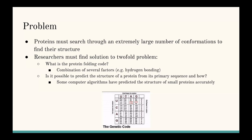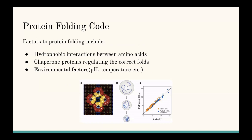We're going to talk about the different research done in this area and how these computer algorithms have been continually modified. Other examples of factors that complicate the folding of proteins would be hydrophobic interactions between amino acids — just a different type of chemical interaction like hydrogen bonding. Another factor would be chaperone proteins that regulate the folding of proteins. A final example would be different environmental factors such as pH and temperature, which can all play a major role in the final folding state of a protein.